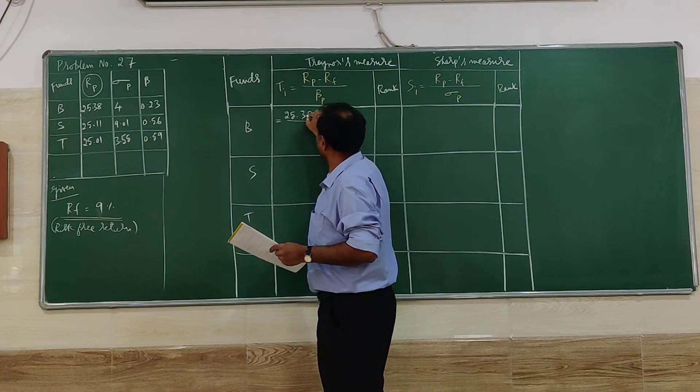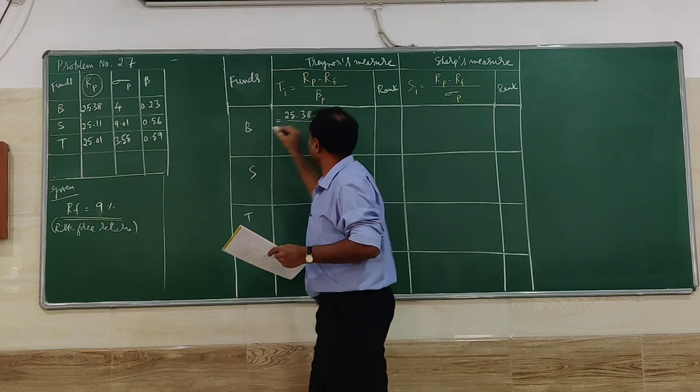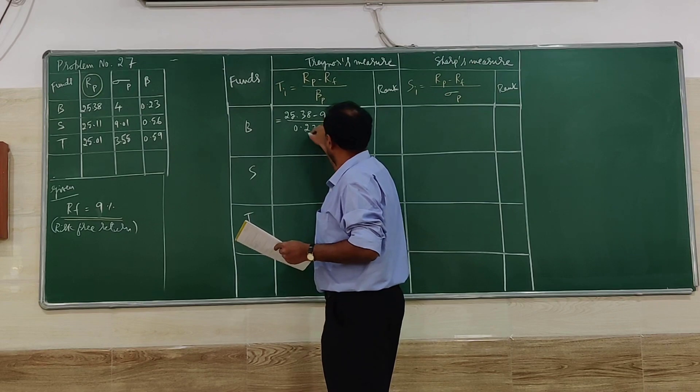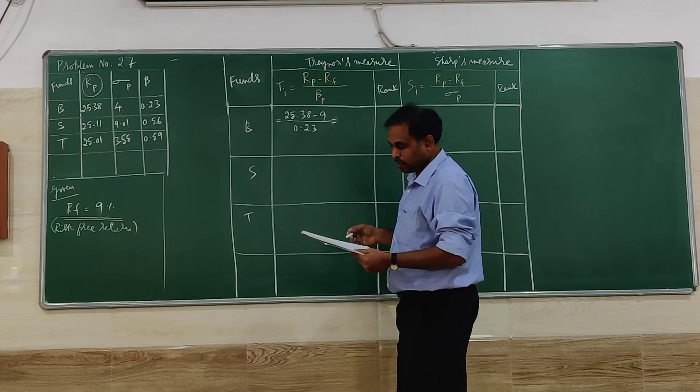So 25.38 minus rf which is 9, divided by beta 0.23, gives you 71.22.